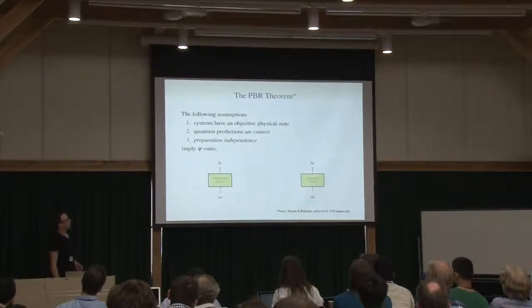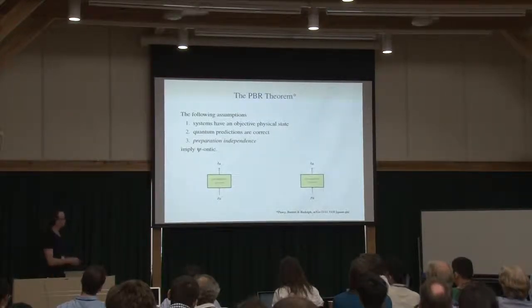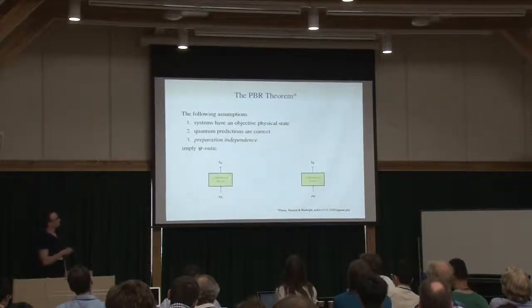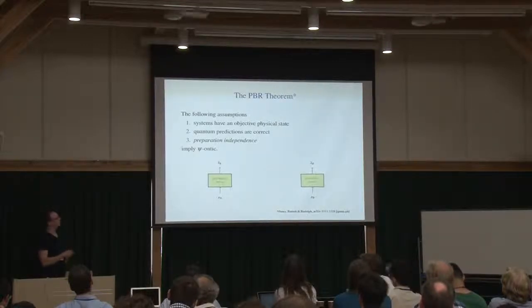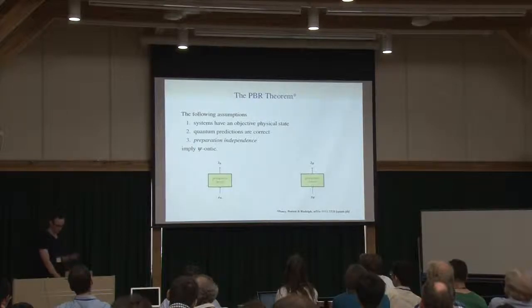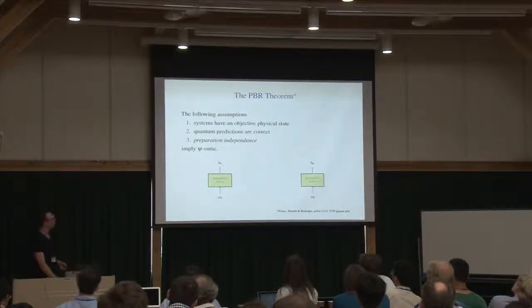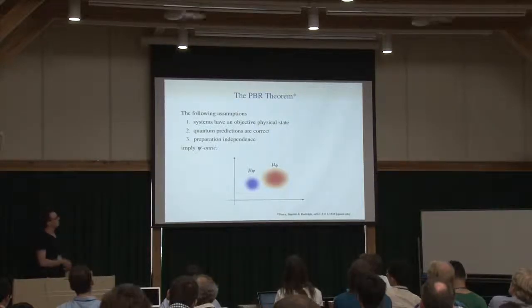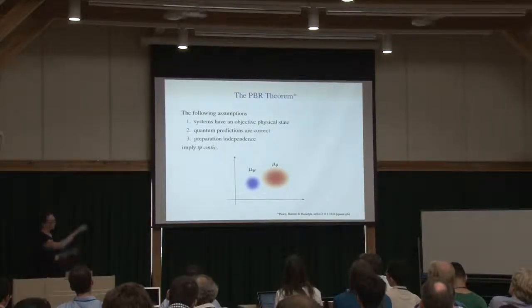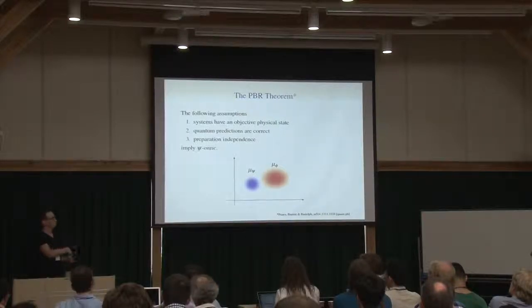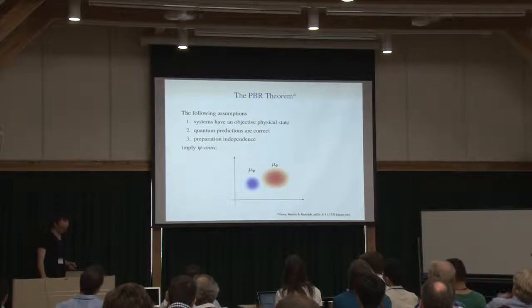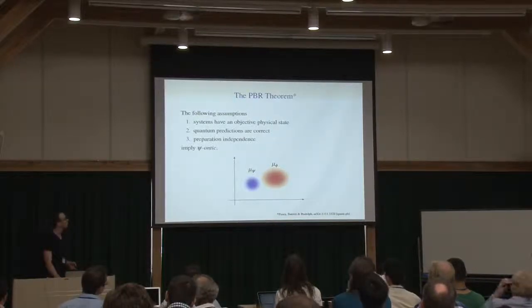So the PBR theorem has some assumptions. Number one and number two are common to all of the no-go theorems. We assume that there is some objective physical state. We assume that quantum predictions are correct. The third assumption is the one that I want to really focus on that hasn't appeared in other results before. And if you grant these things, they show that the probability distributions that would be induced by preparing quantum states can never overlap.